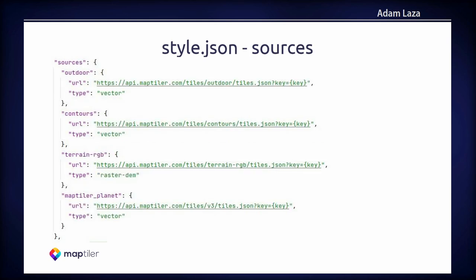The important thing to say is that the style.json which defines the style of the map can have multiple sources. This is how the style.json looks for our outdoor map. You can see there is a source for outdoor features, for contours, a raster source for terrain RGB tiles, and another source for different vector tiles.